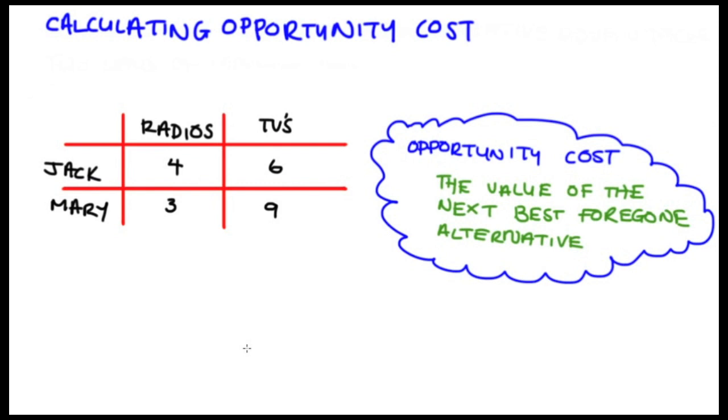For instance, if Jack pulled all of his resources towards making radios then he could make four. That means he's not making any TVs if he's making four radios. If he pulled all his resources into making TVs he could make six, which means he's not putting any resources towards radios at that point.